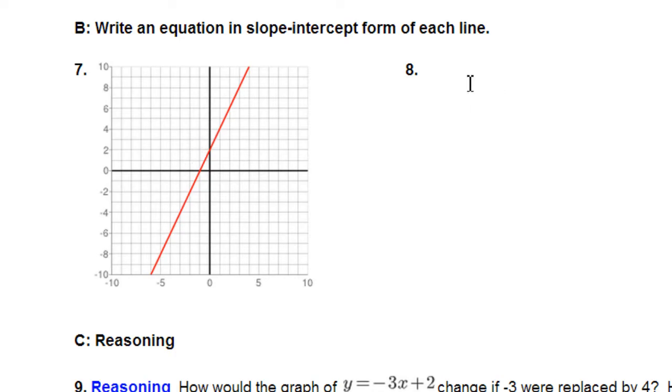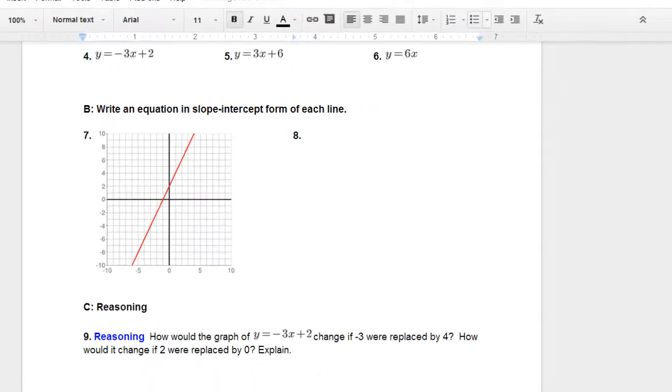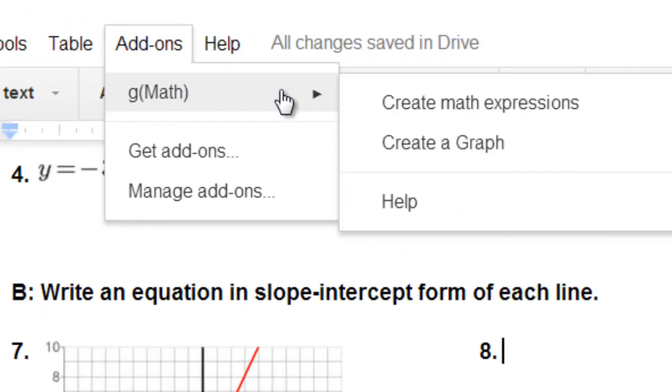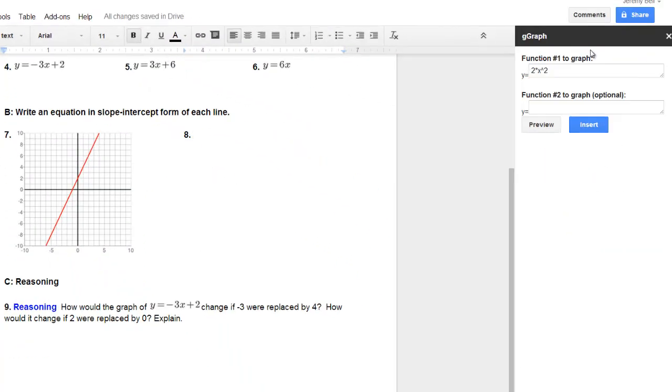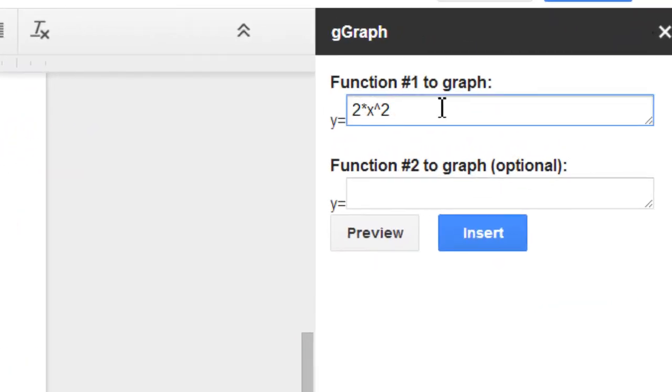We have a graph, and I want to put another graph right next to it. So go back to your add-ons, G-Math, create a graph. And you can create just one equation, or you can create a system of equations by putting in two different equations and graphing those.